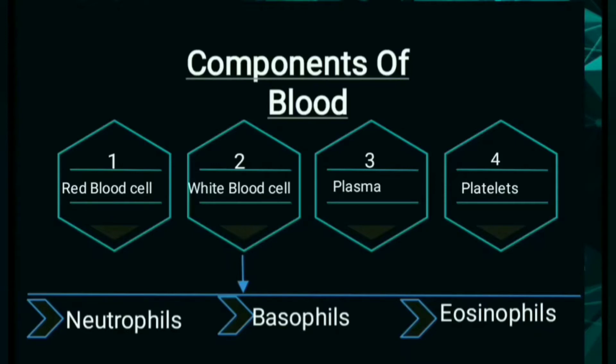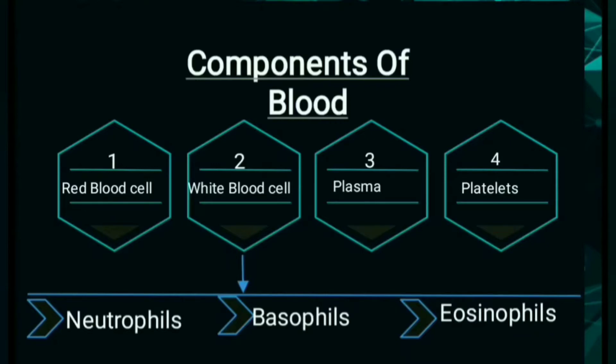There are four components of blood. The first one is red blood cell, also known as erythrocyte. The second one is white blood cell, also known as leukocyte. The third one is plasma, and the last one is platelets.